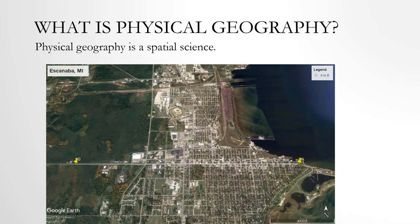Physical geography is a spatial science. That is a key part of physical geography. By spatial science, I mean how do things interact — how do places, locations, and areas interact with natural systems, processes, and societal and cultural activities that occur on Earth's surface?